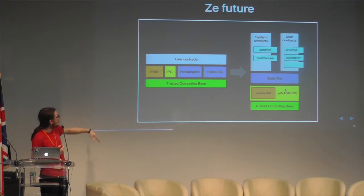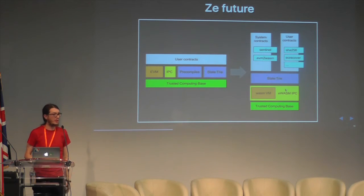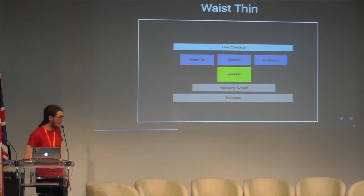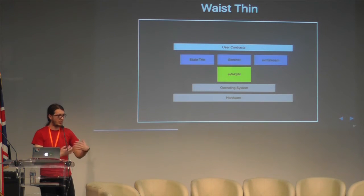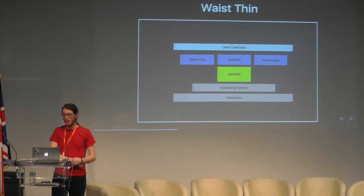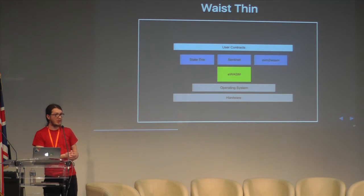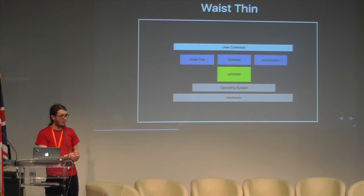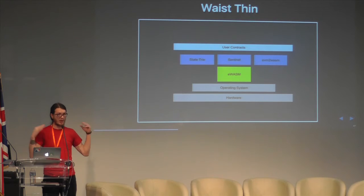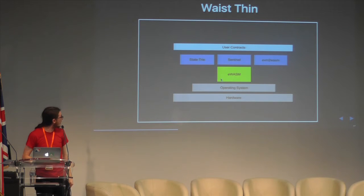Instead of building things horizontally, we should build things vertically to minimize our trusted computing base. I think the natural outcome from this is we sort of come up with a waist-thin protocol. We see waist-thin protocols in networking stacks, and this is a common pattern that we see in nature also. I think it's a good metric that you're on the right track with protocol development when you see this sort of pattern emerge. For us, we have high pressure to have a small trusted computing base right in this layer, and then everything else built on top of it.